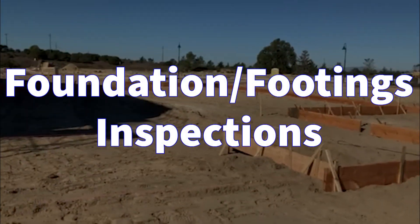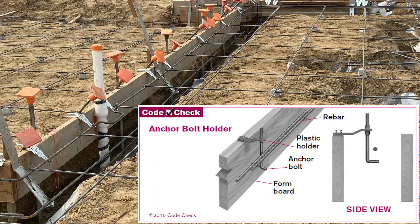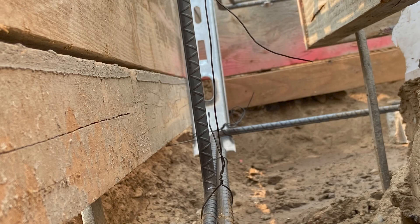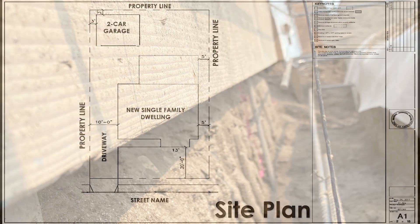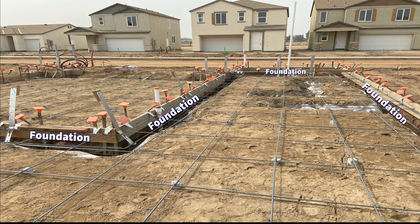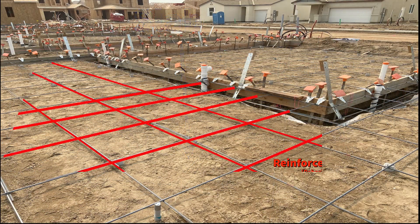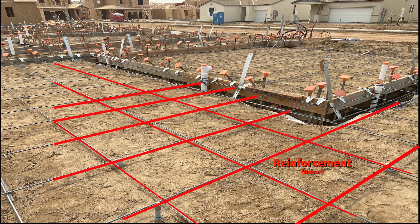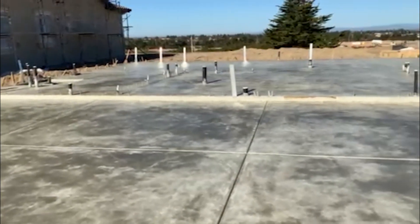Next is the foundation inspection, which takes place after the forms are installed, including the rebar, anchor bolts, and hold-downs. An inspection report by the soils engineer of record may be required prior to this inspection for certification of the footings excavation and pad compaction. A certification from a licensed surveyor for the proper location of the building setbacks and elevation may also be required, so check with your local building department. After the foundation inspection is signed off, the concrete slab inspection occurs. The reinforcement and anchorage are installed, as well as the sand sub-base and vapor barrier. Both the foundation inspection and concrete slab are often inspected concurrently.